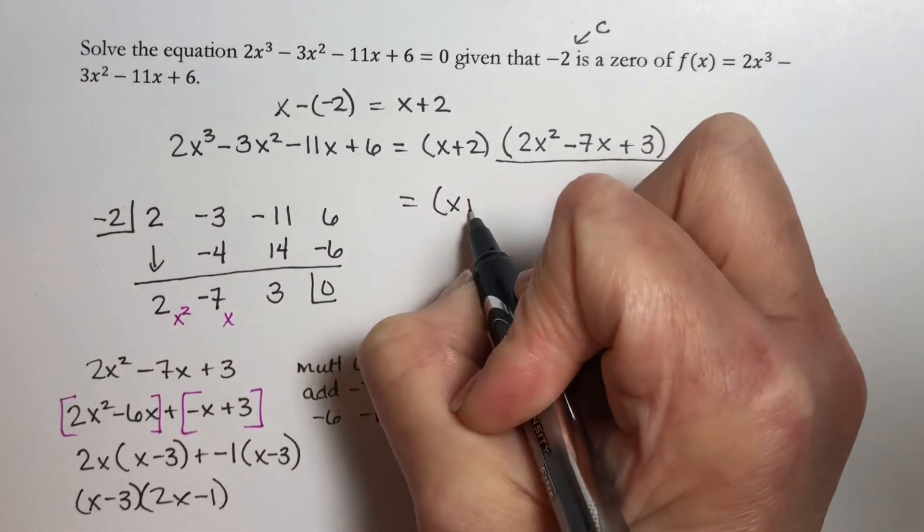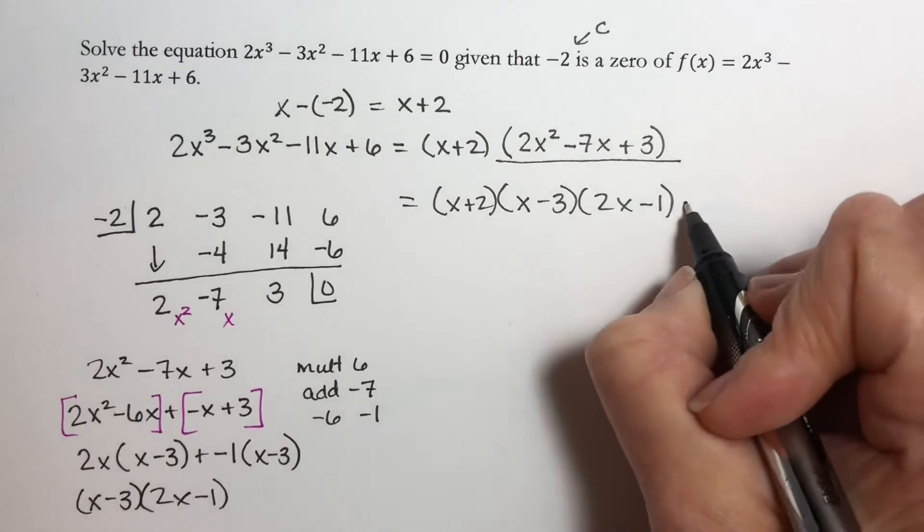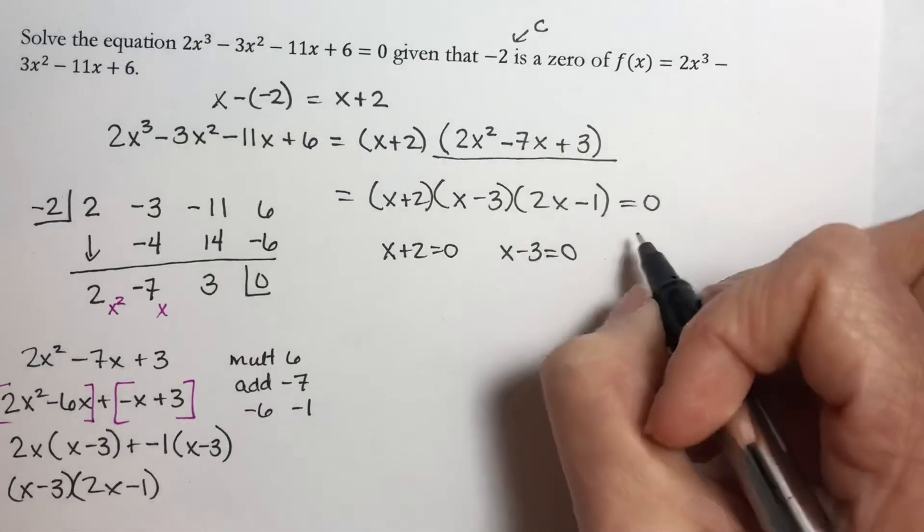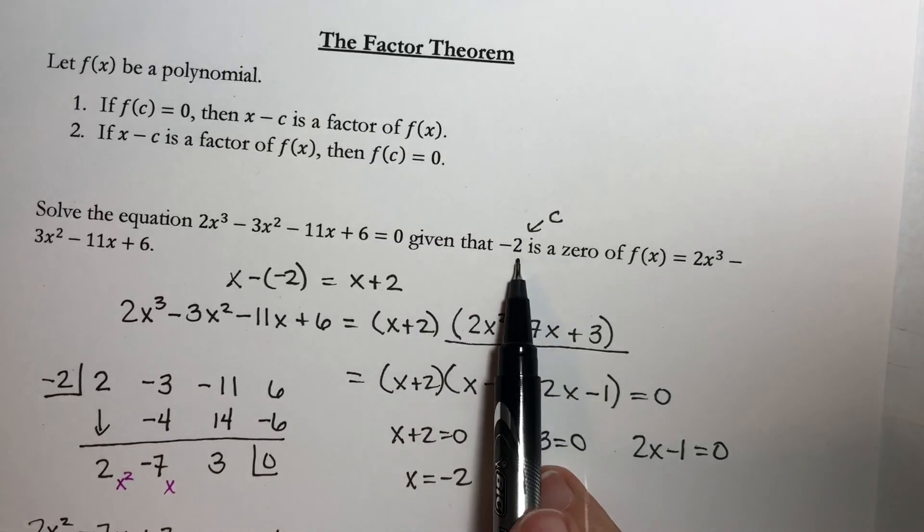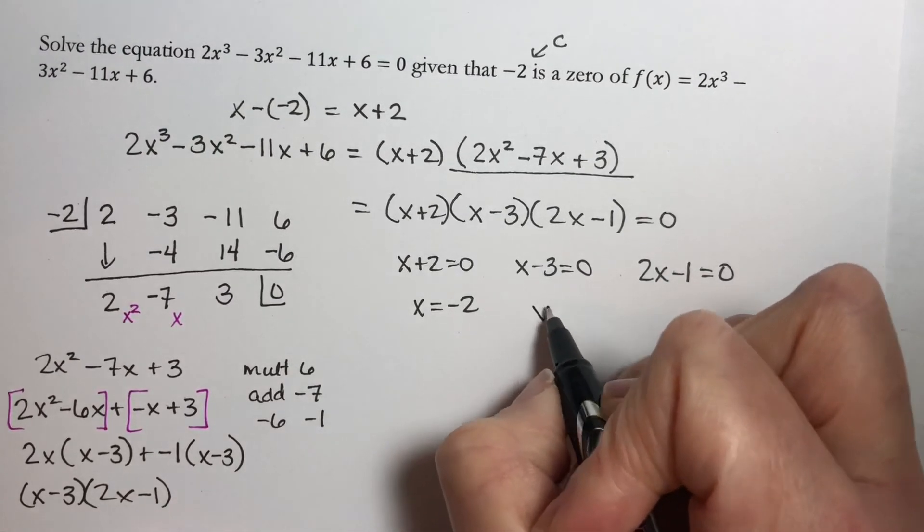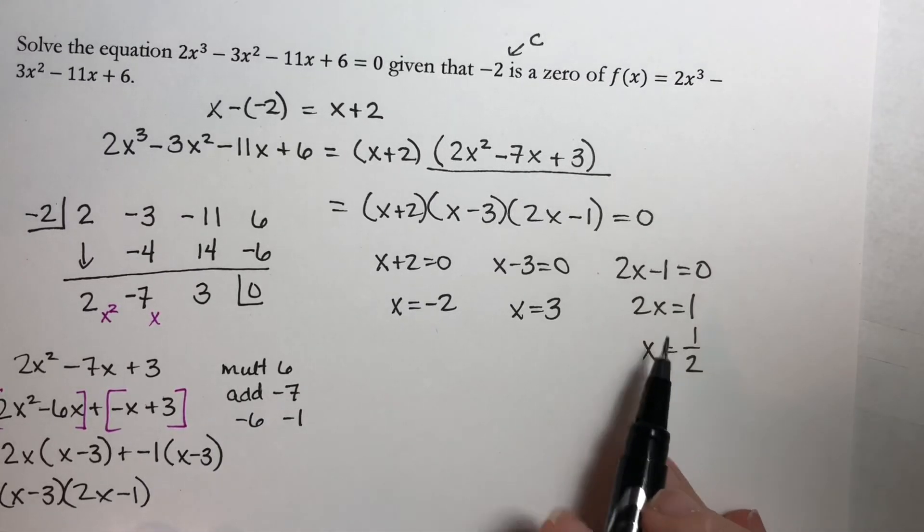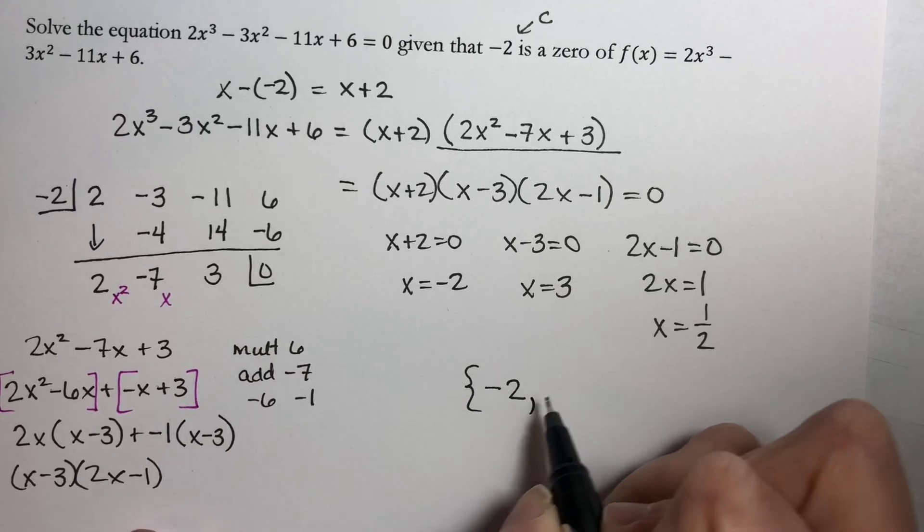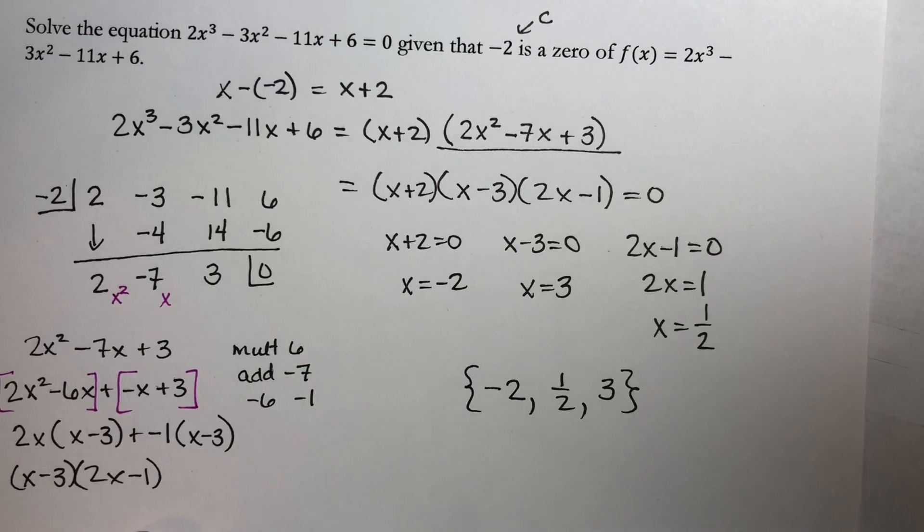So this is equal to x plus 2 times x minus 3 times 2x minus 1. Now, if this is equal to 0, then to solve this, I set x plus 2 equal to 0, x minus 3 equal to 0, and 2x minus 1 equal to 0. Now, I'll solve each of these, and I get x equals negative 2. And we were already told that that was a zero, so it's good that we got that again. From here, I get that x equals 3. And here, I have 2x equals 1, so x is equal to 1 half. I have three answers, which is what I should have, because the number of answers should always equal your degree. And we have our three answers as negative 2, 1 half, and 3. These are separate answers, so they should be written in set form with braces here. Remember, the order you write your answers in does not matter at all. So, here are your answers.